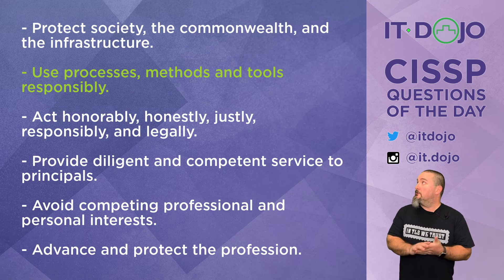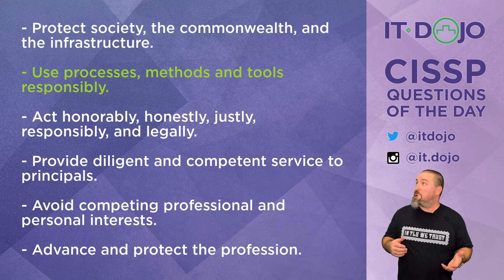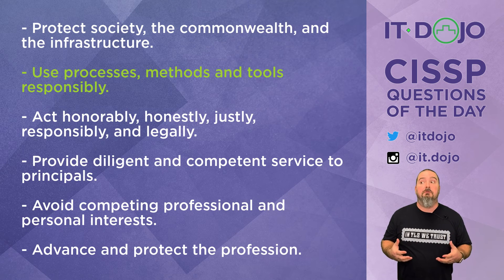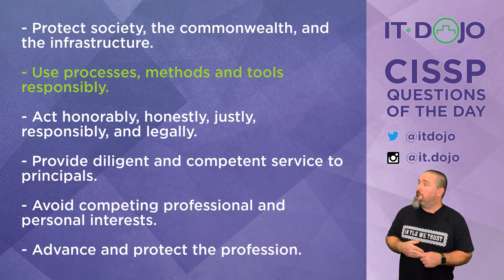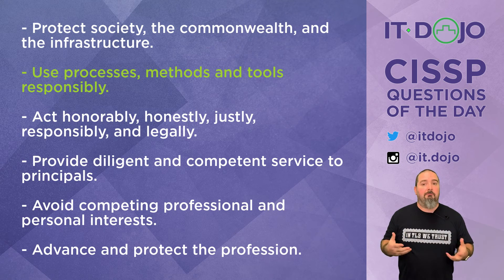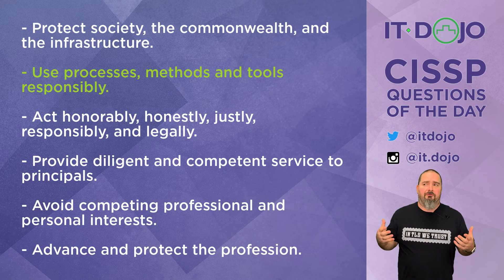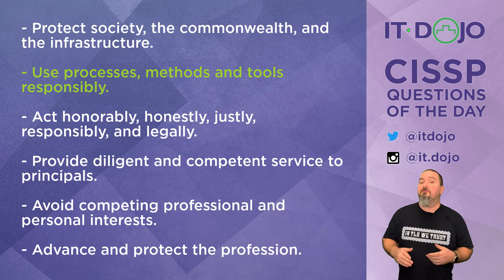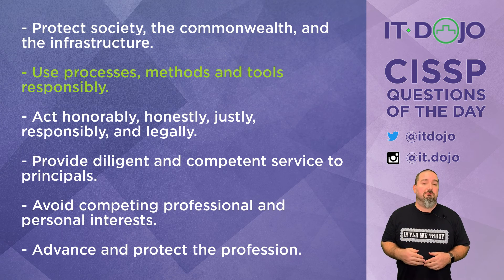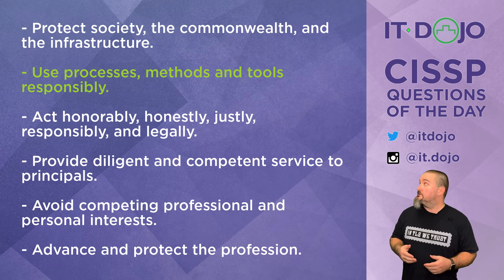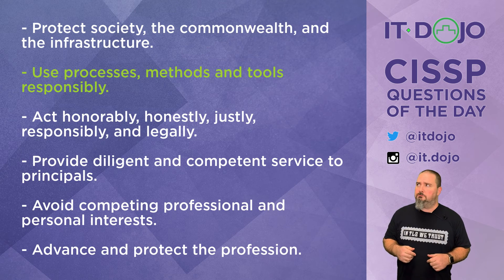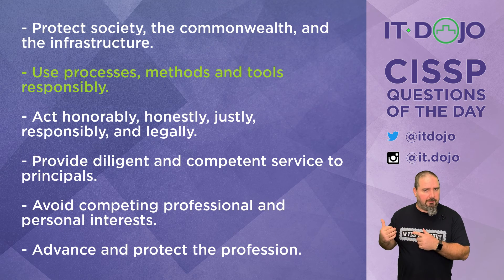Choice three — 'act honorably, honestly, justly, responsibly, and legally' — yes, ISC Squared requires you to agree to that if you want to be a CISSP. You must agree to abide by their code of ethics, and they take it seriously enough to put exam questions on it. Choice four — 'provide diligent and competent service to principals' — is also one of ISC Squared's cannons in their code of ethics, so don't pick that as an answer on this question.